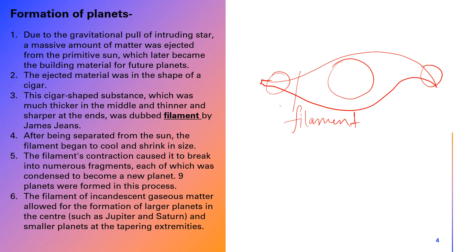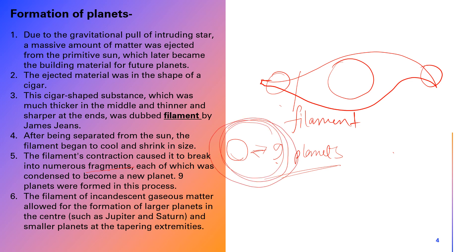When the filament detached from the sun, it started to lose heat, causing it to shrink and contract. After contraction, it broke into numerous fragments and divided into nine parts, forming nine planets. Since the filament was thicker in the middle, larger planets like Jupiter and Saturn formed from the middle part, while smaller planets formed from the edges.